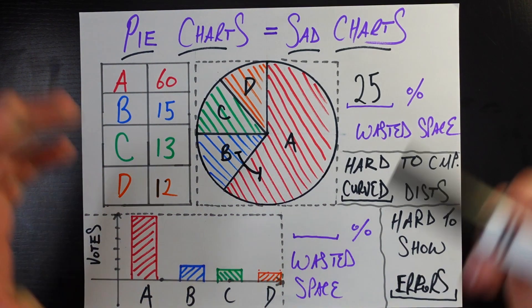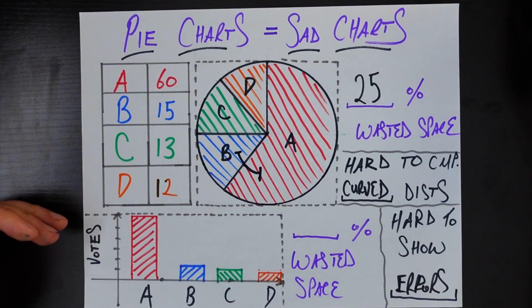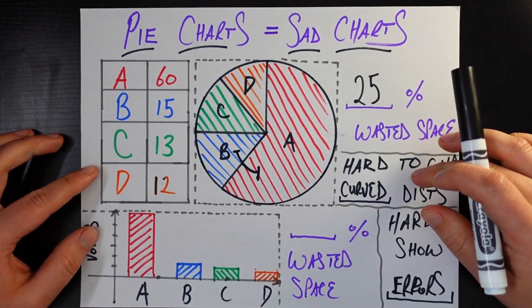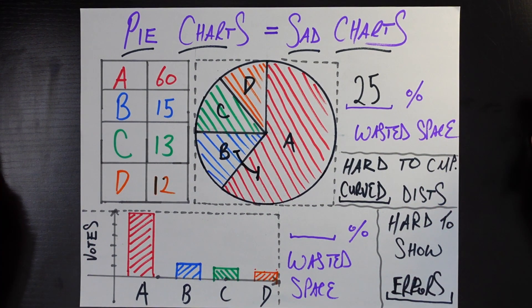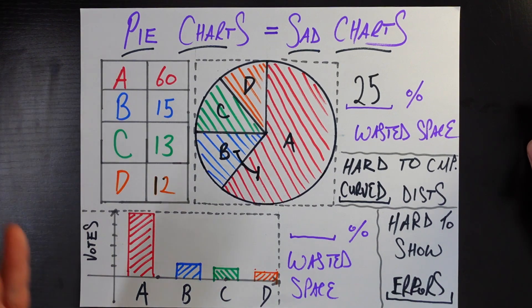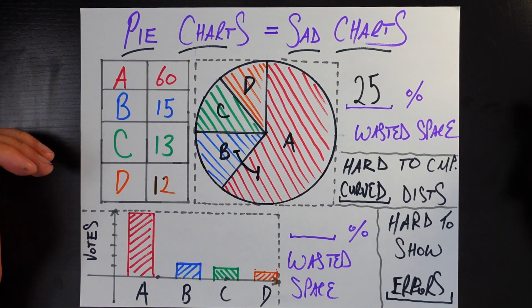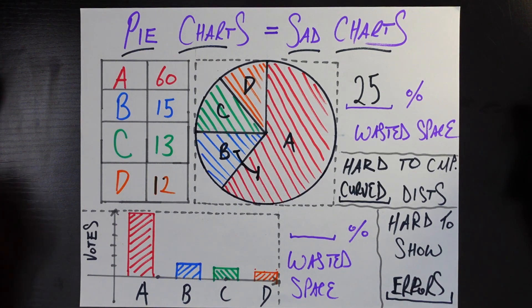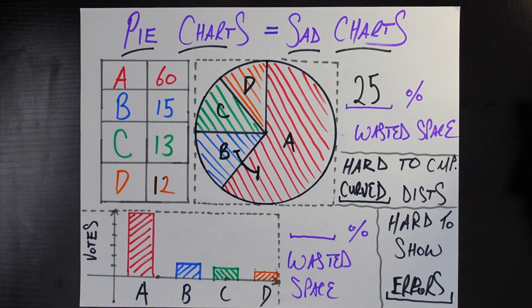Now, what could you use to visualize this data instead? The most natural other thing you could use to visualize this data is a simple bar chart. So let's run through these same examples on this bar chart where we have A, B, C, and D, and the y-axis is just measuring how many votes they got.